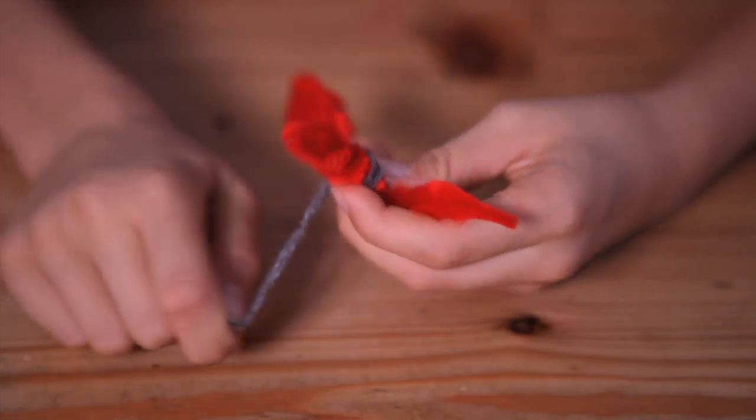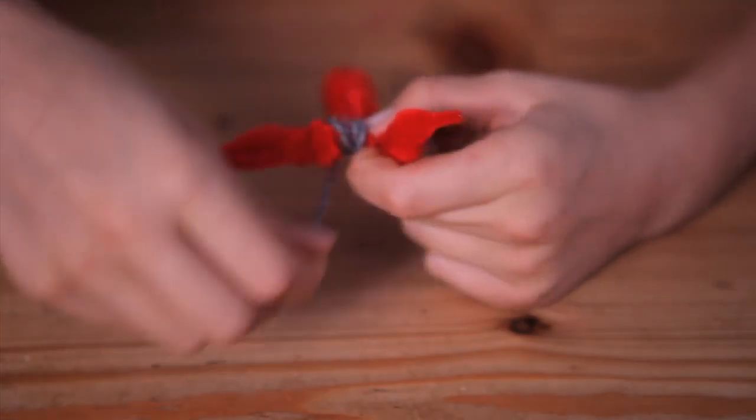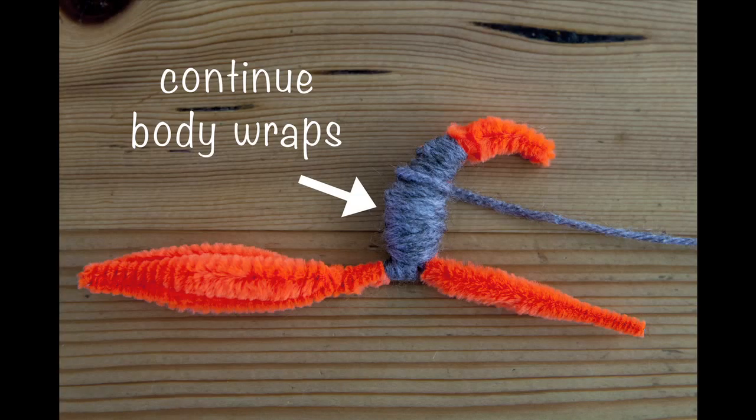Then I do about five wraps around the tail. Then I go back to the body and do as many wraps as I want. And that way the tail doesn't fall off.